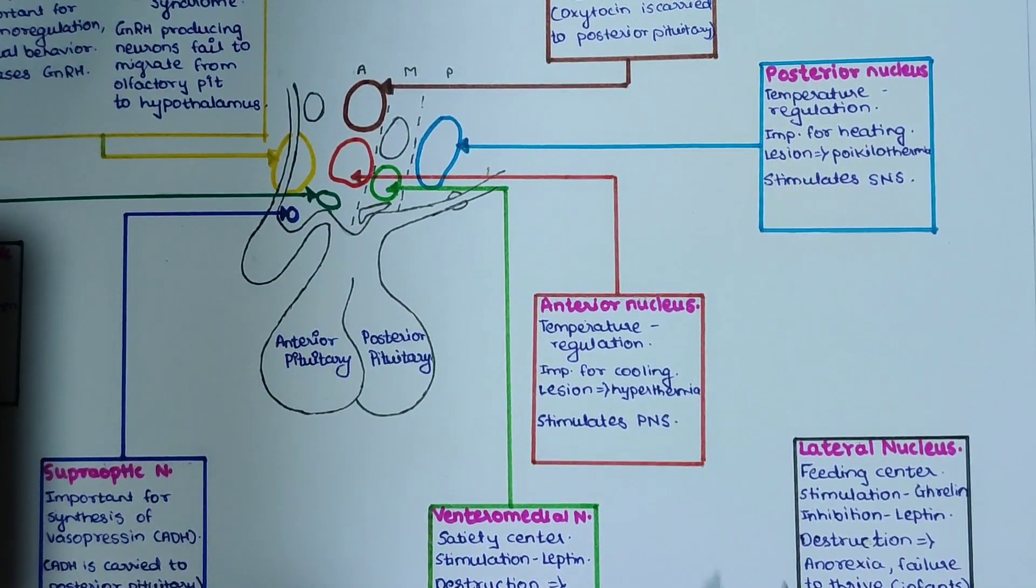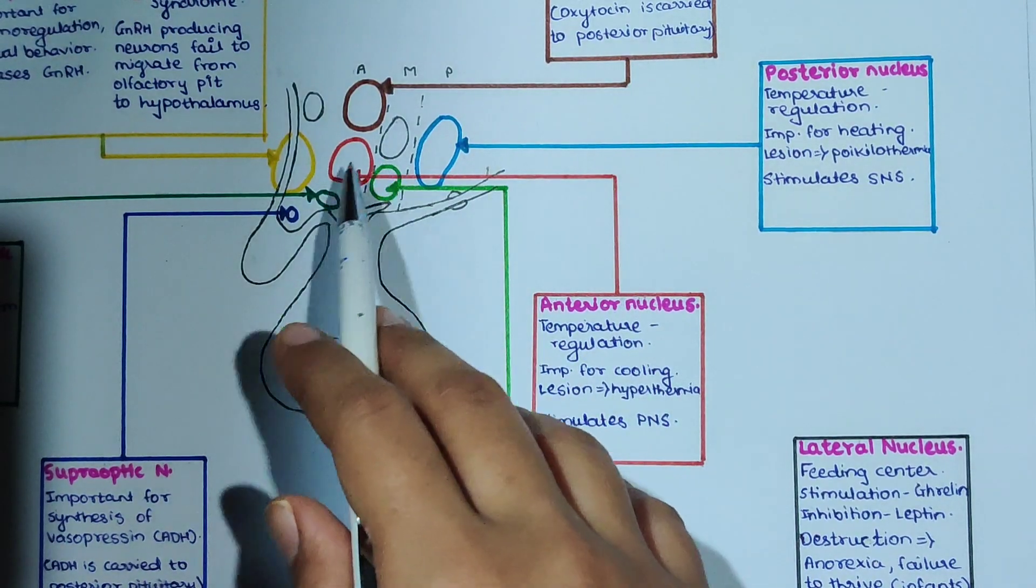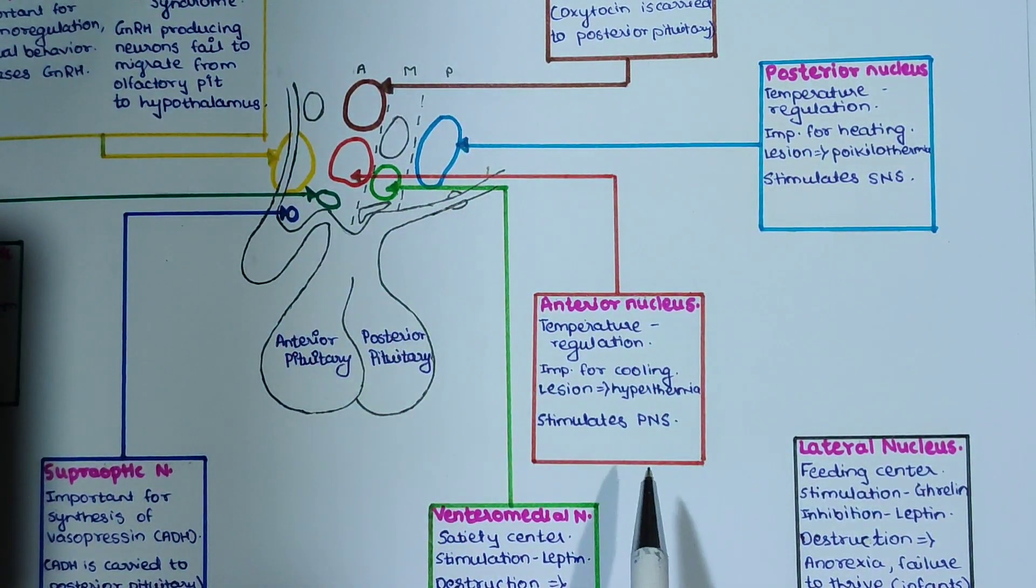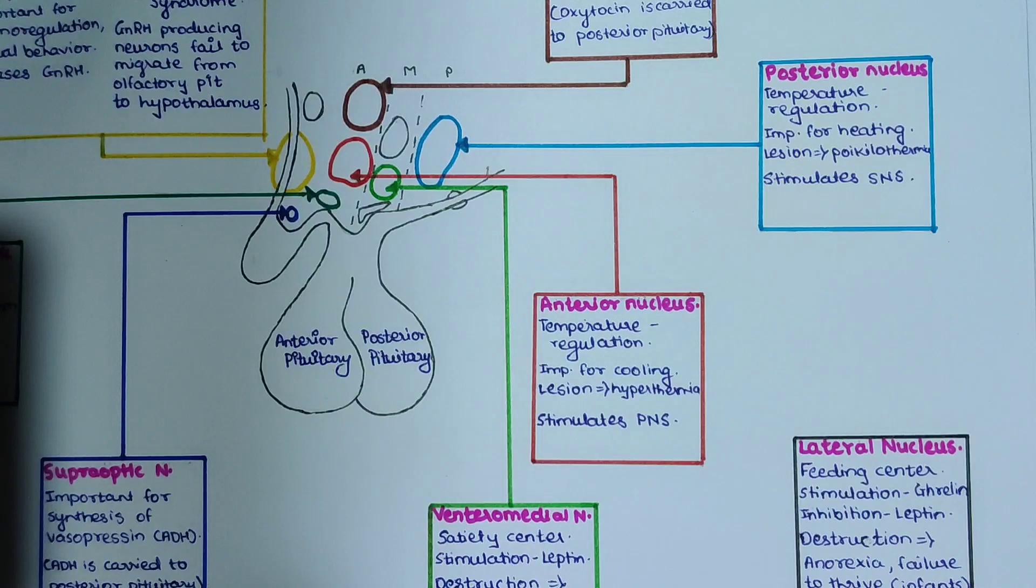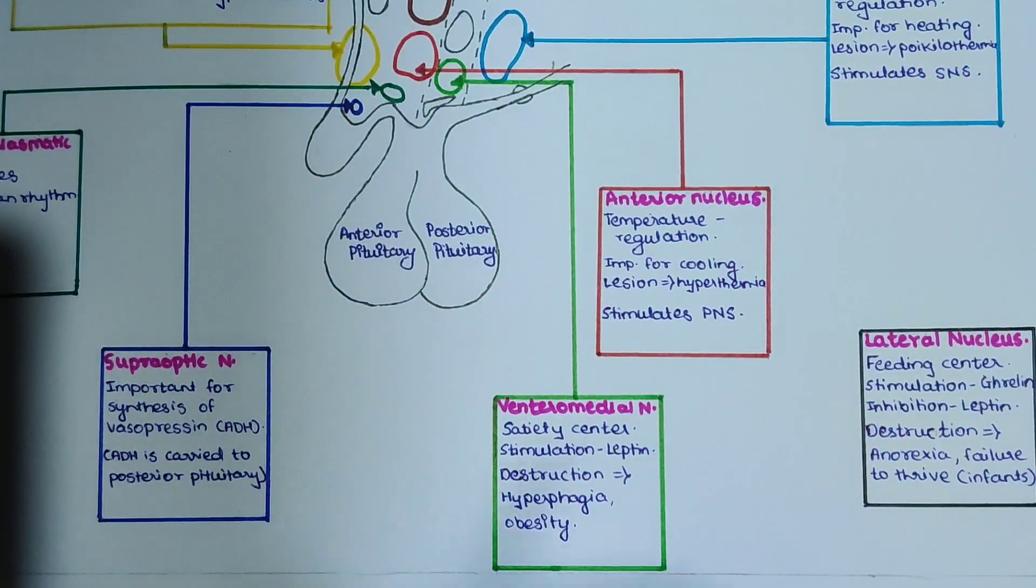Another important nucleus for temperature regulation is anterior nucleus, highlighted in red. It is important for cooling. If there is a lesion in anterior nucleus, it will lead to hyperthermia. Anterior nucleus can also stimulate the parasympathetic nervous system.